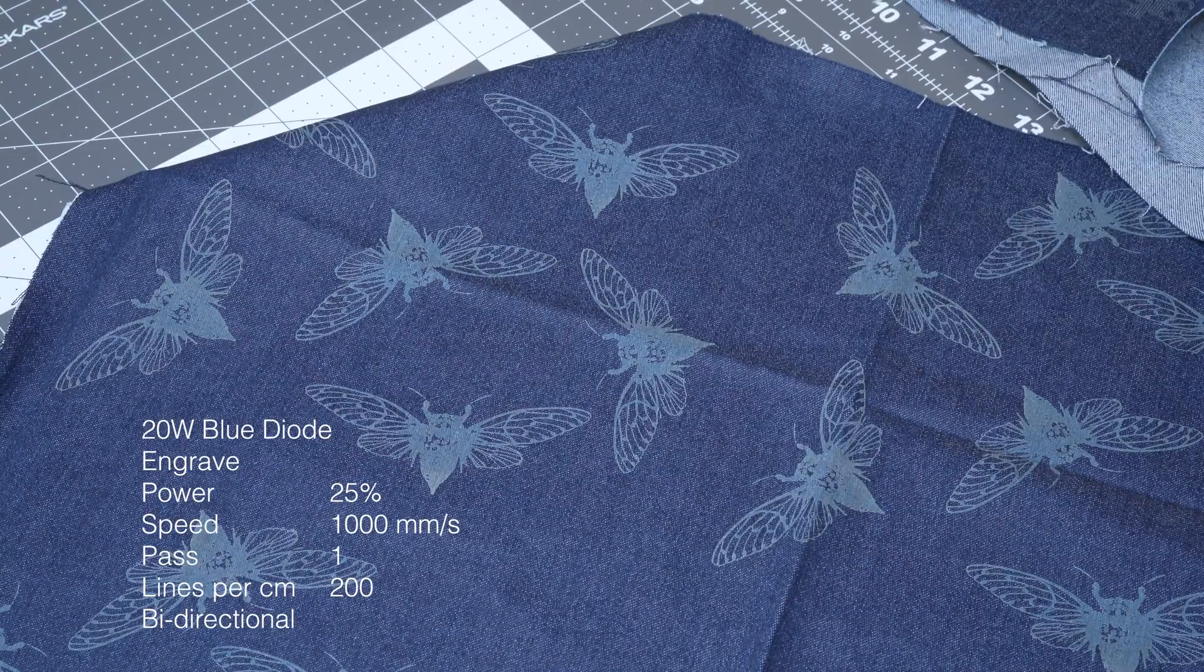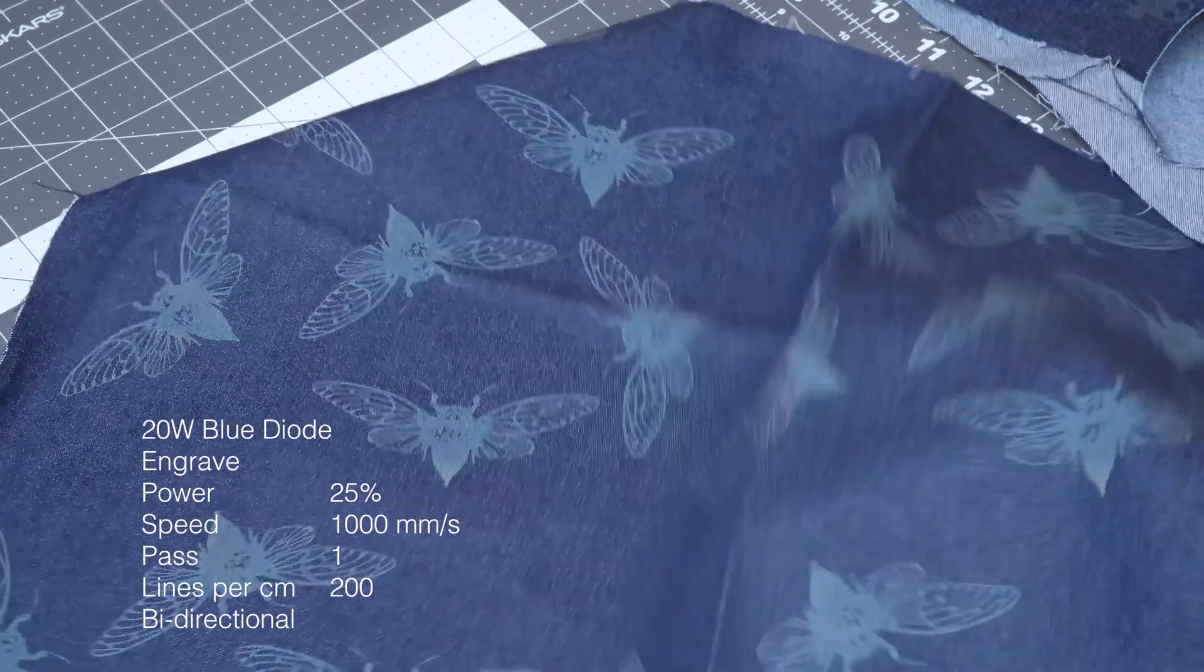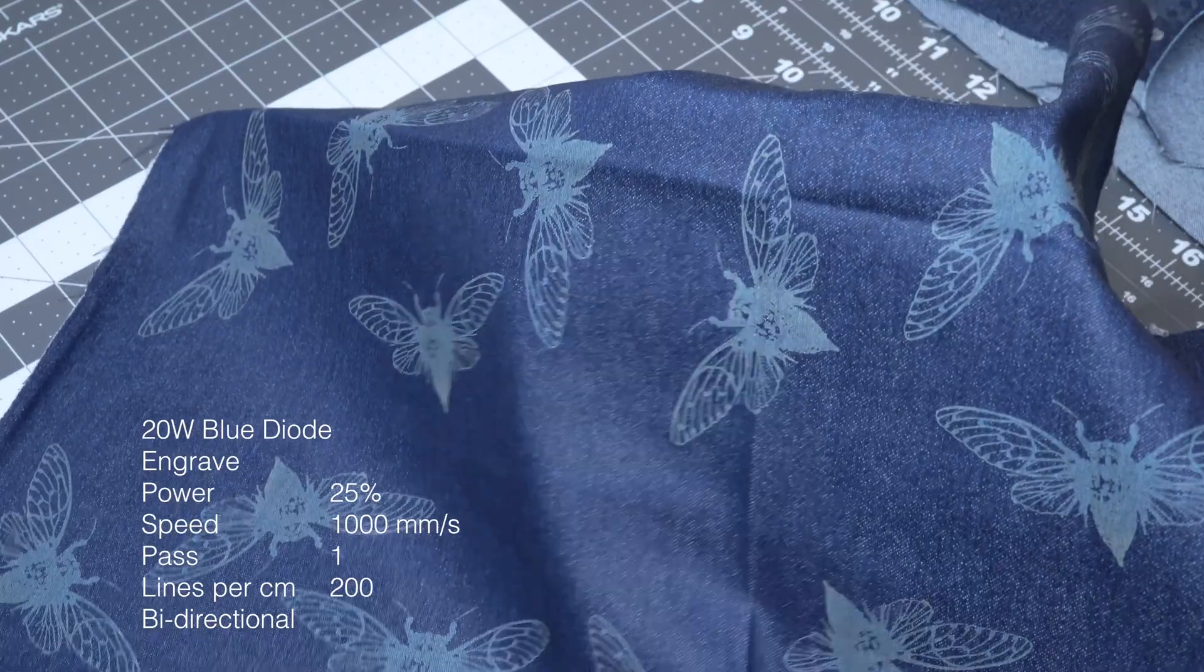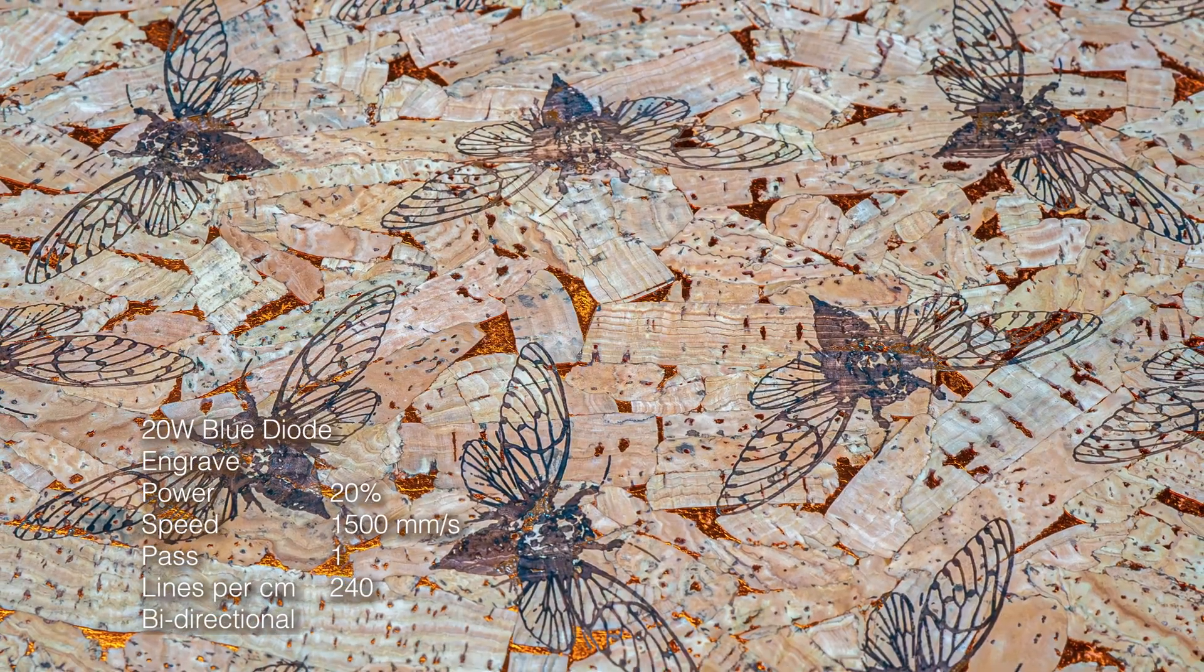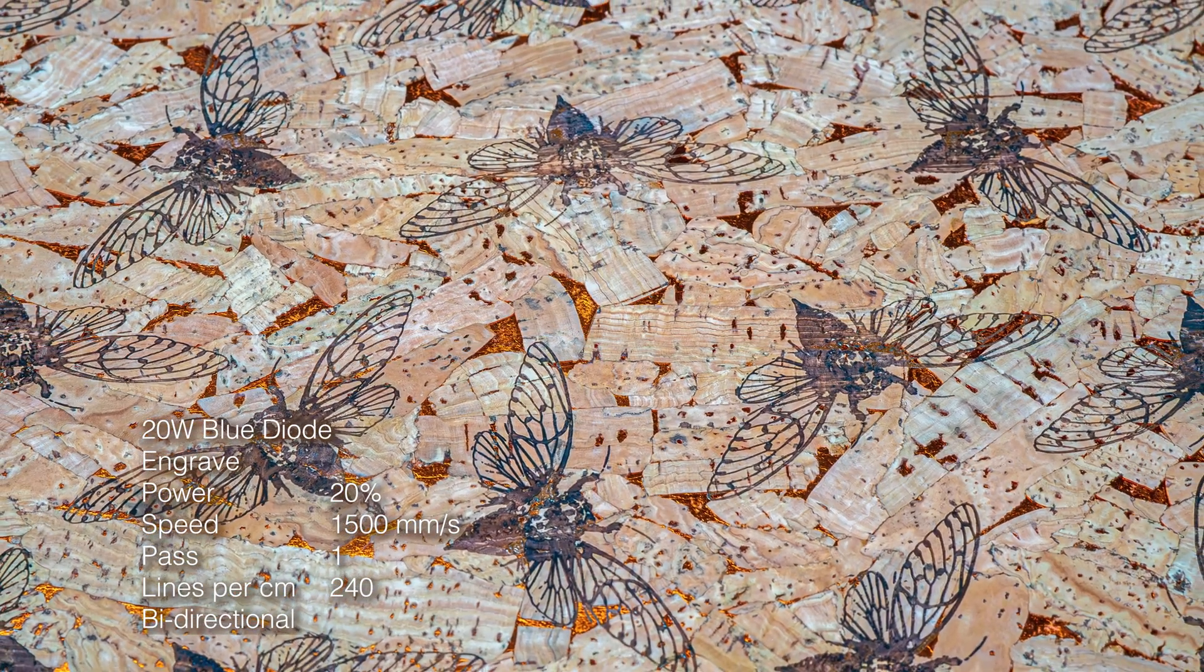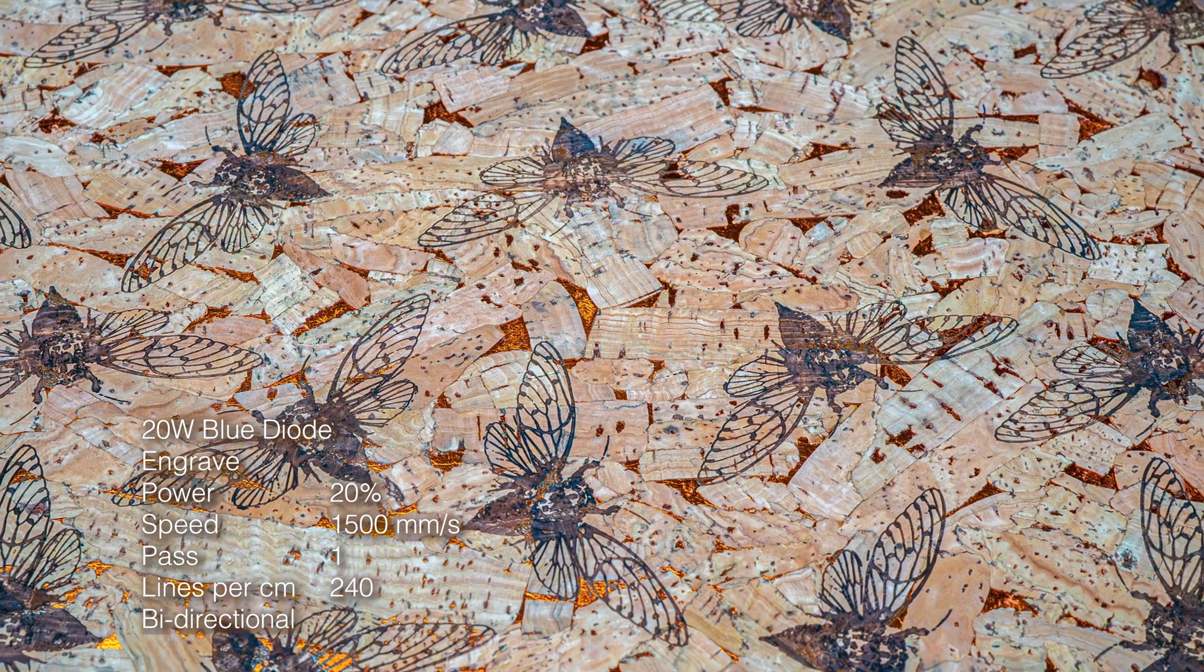A more random pattern is one way to compensate for a material that may have difficult to control stretch or elasticity. It also allows you to reposition and adjust individual elements within that pattern before each time you burn it into the material.